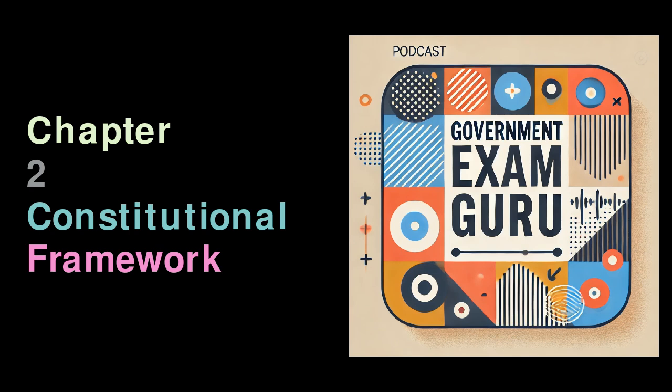Crown Rule, 1858–1947: Following the transfer of power to the British Crown after the Sepoy Mutiny, this period marked direct and formal British governance. New laws and administrative systems, such as the Indian Penal Code and the Indian Evidence Act, were implemented during this time. The British also introduced democratic institutions, although they were limited and unequal, laying the groundwork for India's future political system. The Indian Constitution today reflects both the influence of British legislative practices and the unique demands and challenges of an independent nation.